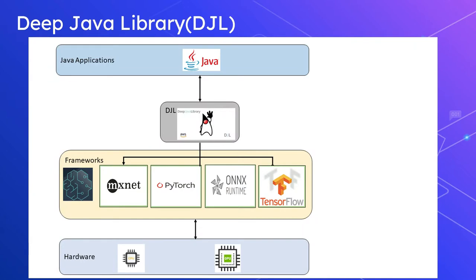As shown in this diagram, DJL is an abstraction layer that helps you connect to any deep learning framework. Currently it supports MXNet, PyTorch, ONNX Runtime, and TensorFlow. The top layer is your Java application, which uses the DJL APIs. The DJL layer in turn connects to the corresponding framework you choose to use.